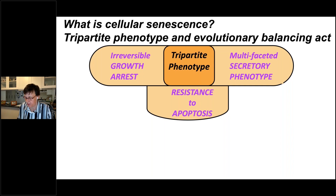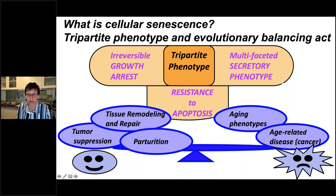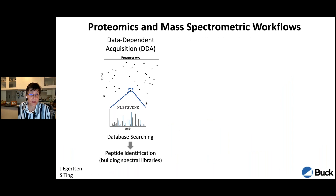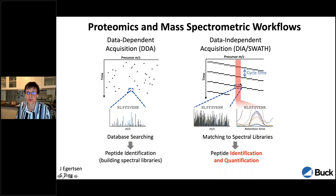There are detrimental things with aging — the senescence burden increases with age. But there are also good things about senescent cells: tissue remodeling, repair, and tumor suppression. Why are we interested in senescent cells? They increase with age, so maybe those can be used as biomarkers for aging. We do some DDA of course, but we have shifted a lot of our workflows over to DIA — looking at really comprehensive, unbiased acquisitions.